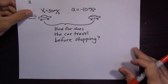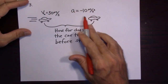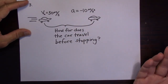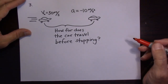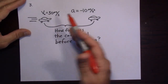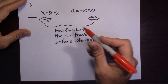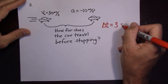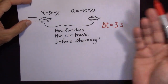Another example: a car starts at 30 meters per second with an acceleration of negative 10 meters per second squared. How far does the car travel before stopping? To stop, it needs to get to 0 meters per second. It's slowing down at 10 m/s every second, so after 1 second it's going 20, after 2 it's going 10, and after 3 seconds it's going 0 meters per second. It needs 3 seconds to stop.